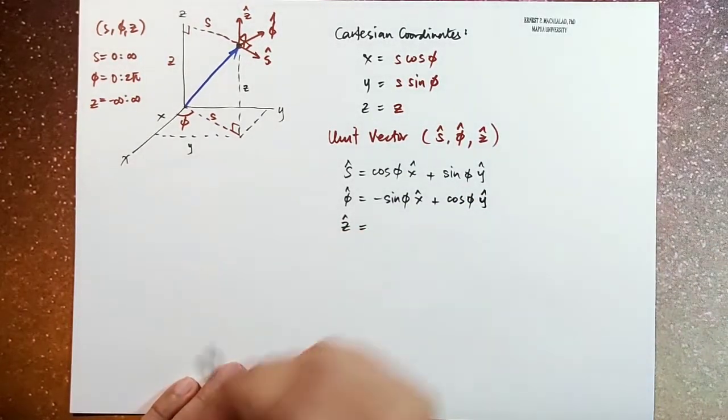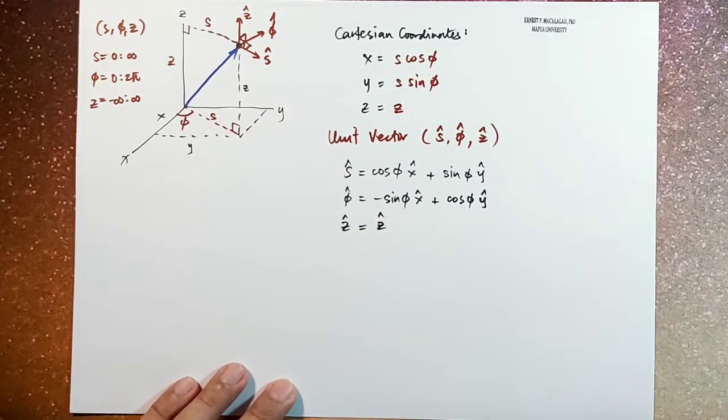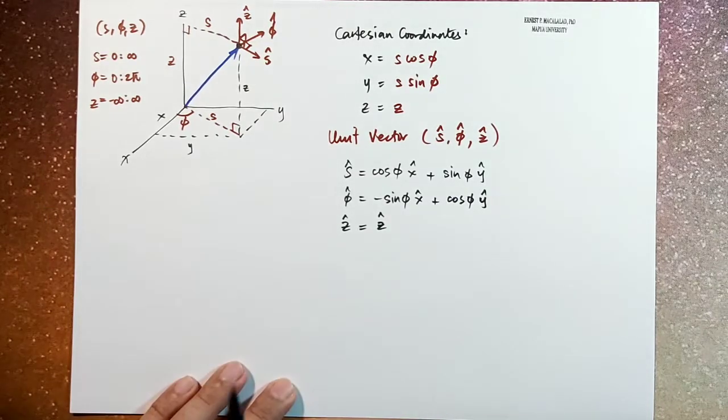And then yes, as you expect, z hat is the same as your coordinate system. So in other words, z hat is constant. It always points along the z direction.